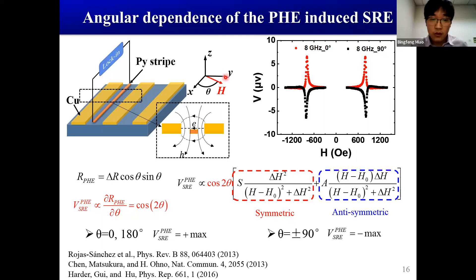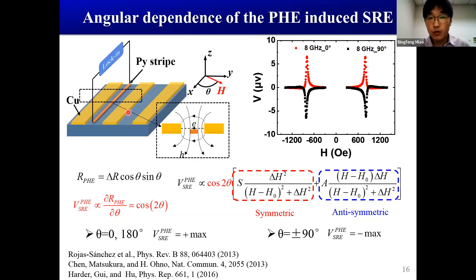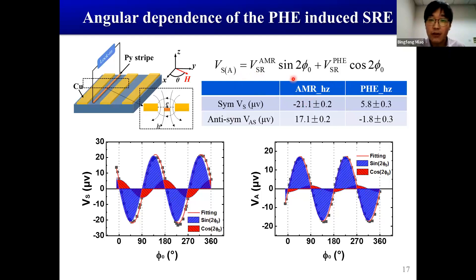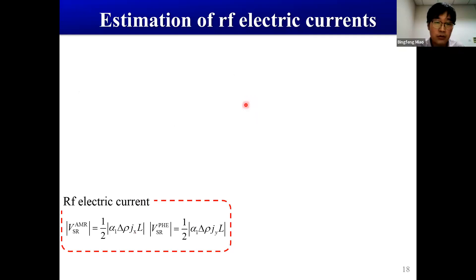The planar Hall effect-induced rectification has been discussed in several references, but it hasn't drawn enough attention — possibly because people intuitively assume the induction current is constrained along the stripe and tend to neglect the transverse component. We performed experiments with different in-plane directions of the magnetic field. In short, we find the data can be well-fitted by a combination of AMR-induced rectification plus planar Hall effect-induced rectification. We can also use this rectified voltage to estimate the current density.